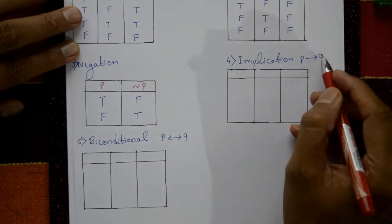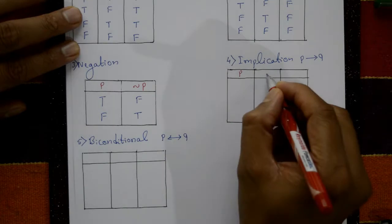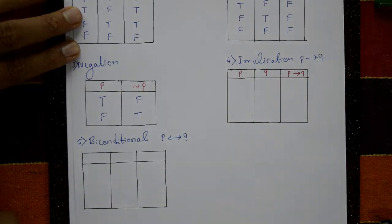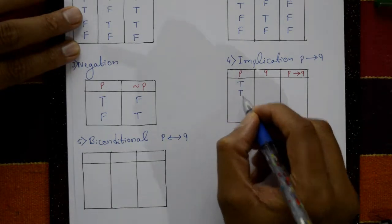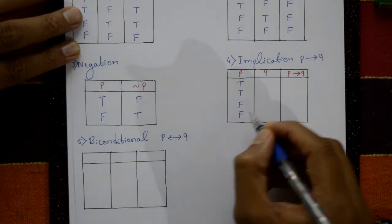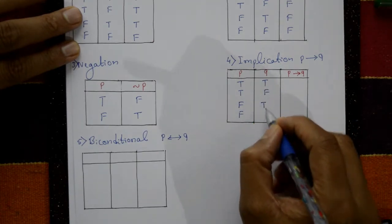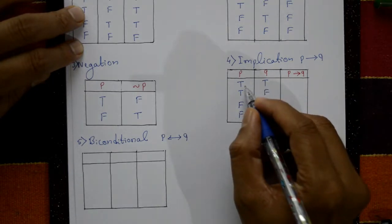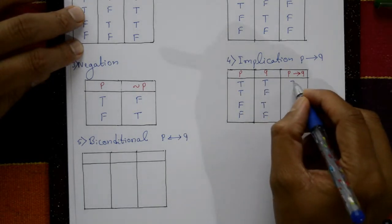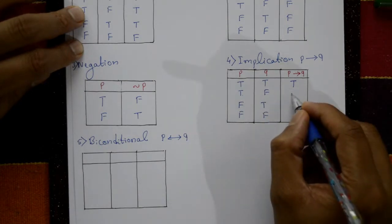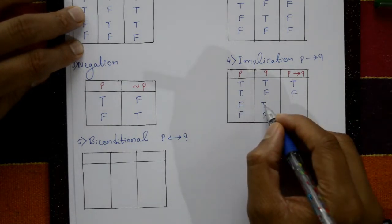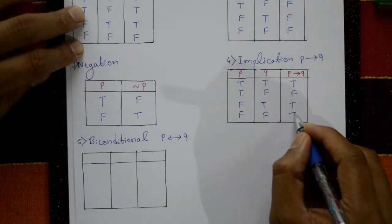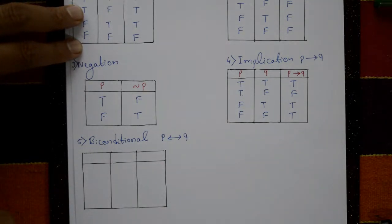Fourth one: implication, shown with an arrow mark. P implication Q. P is true, true, false, false and Q is true, false, true, false. True implication true is true. True implication false is false. False implication false is true. False implication using is true only.